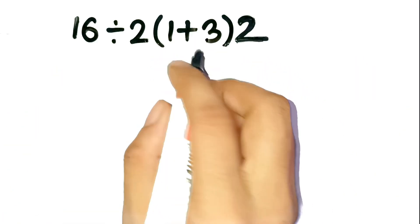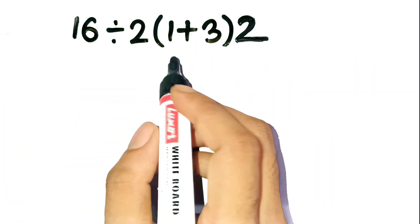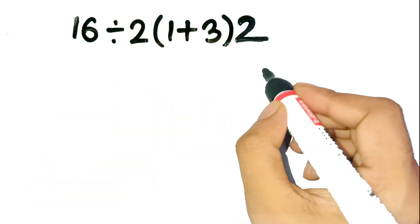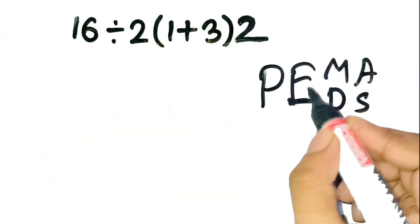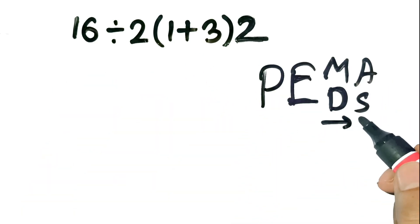Okay, now let's get back to this confusing problem. So the key to this problem lies in understanding PEMDIS. That's parenthesis, exponents, multiplication and division from left to right, and addition and subtraction from left to right.